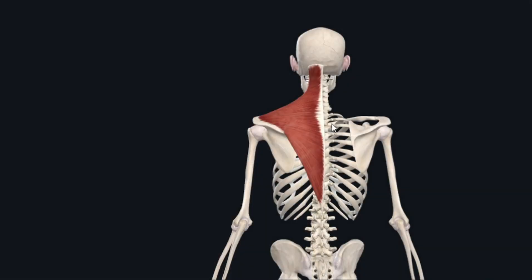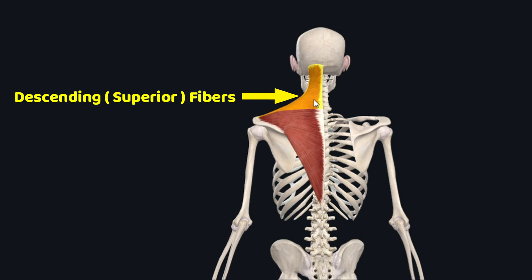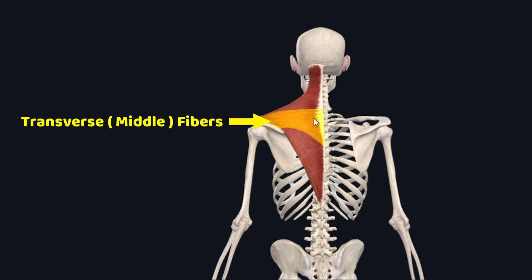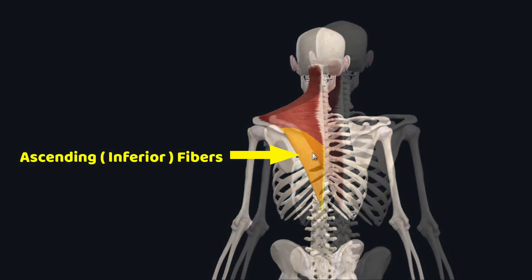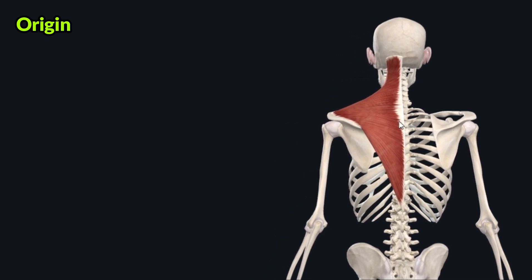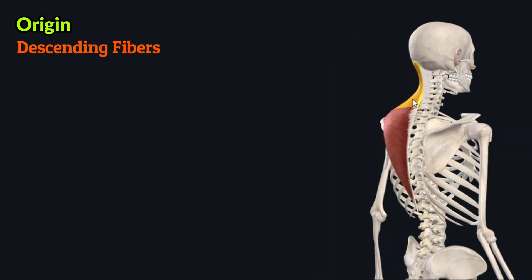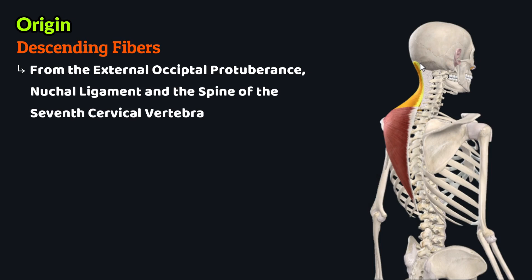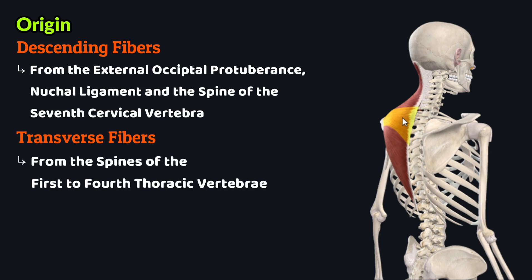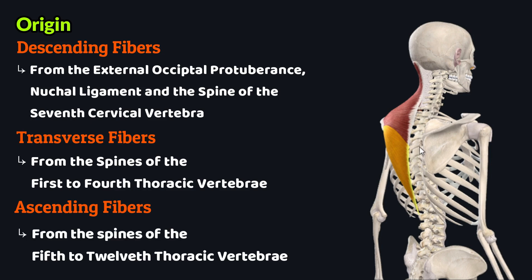The trapezius muscle has three groups of fibers: the descending or superior fibers, the transverse or middle fibers, and the ascending or inferior group of fibers. These fibers originate from different areas. The descending or superior group originates from the external occipital protuberance, the nuchal ligament, and the spinous process of the seventh cervical vertebra. The transverse or middle group originates from the spinous processes of the first through fourth thoracic vertebrae, while the ascending or inferior group originates from the spinous processes of the fifth through twelfth thoracic vertebrae.